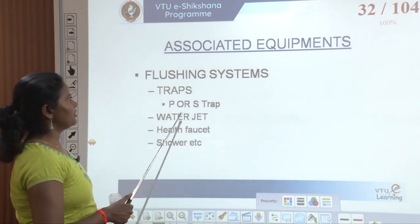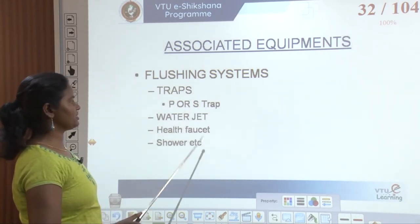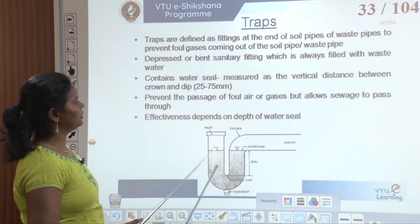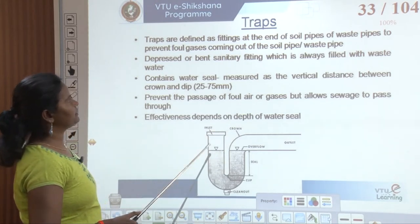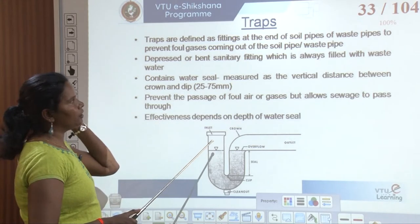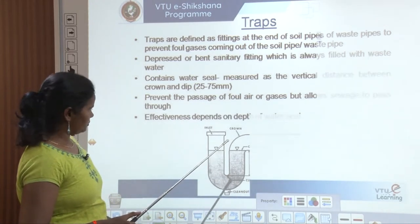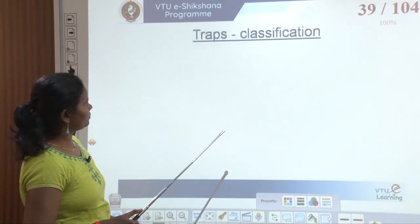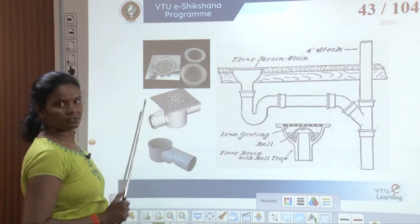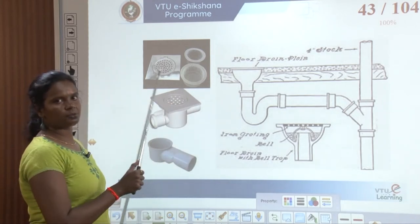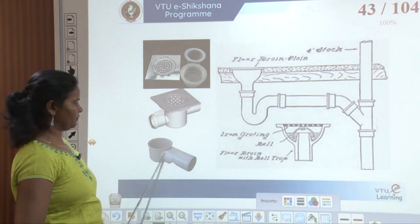We also have traps, which are classified based on functions, shape, and water jets — health faucets, showers, etc. Traps are defined as fittings at the end of a soil pipe or waste pipe to prevent foul gases coming out. In bathrooms we see a plate with holes or gratings — that whole unit is called a trap.